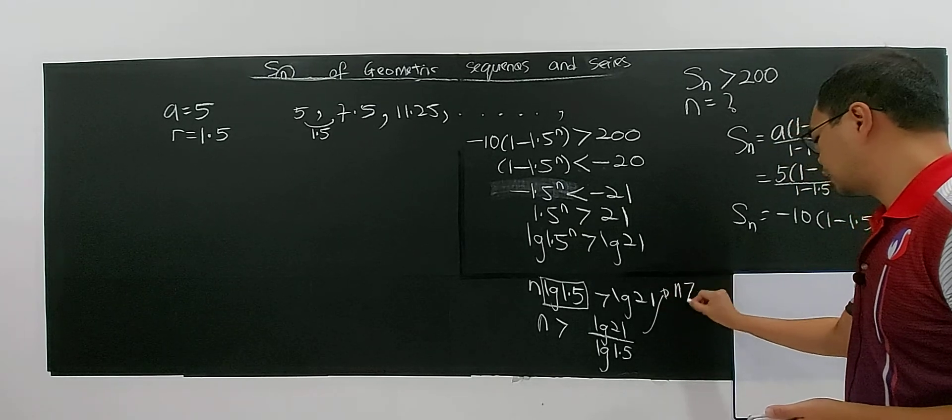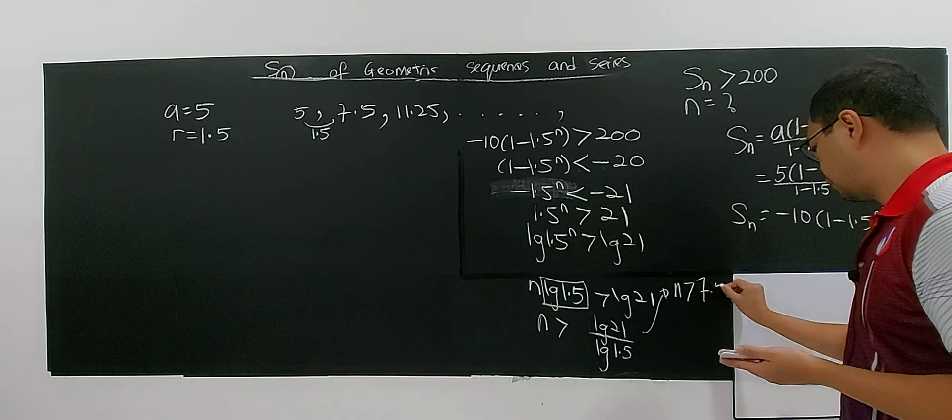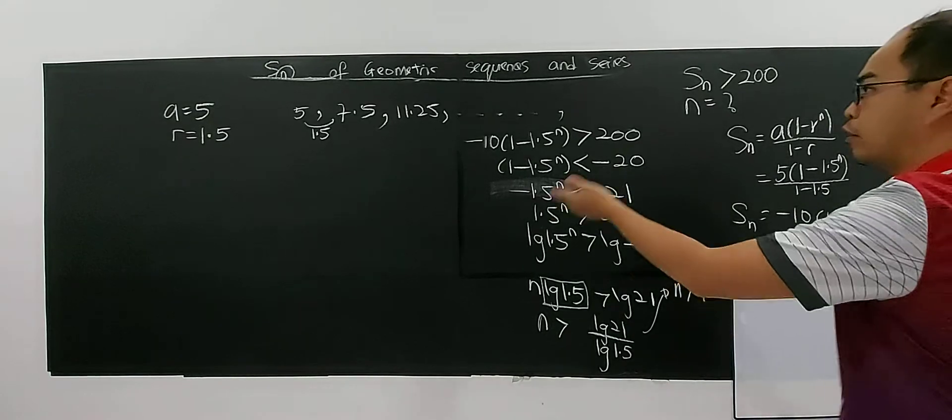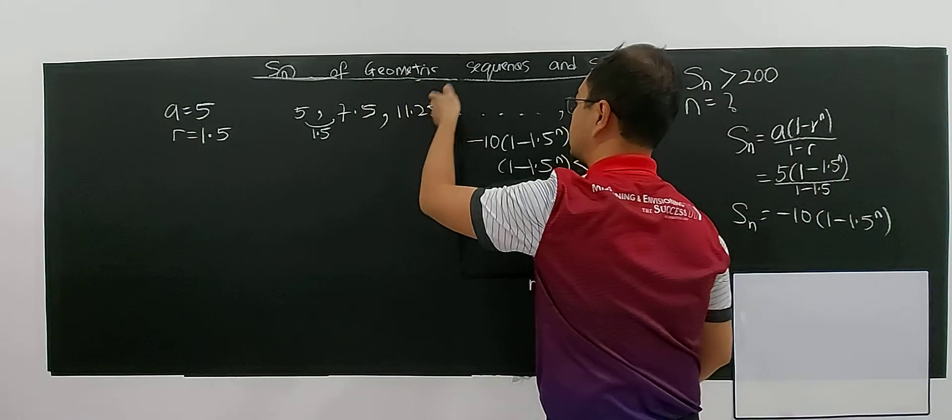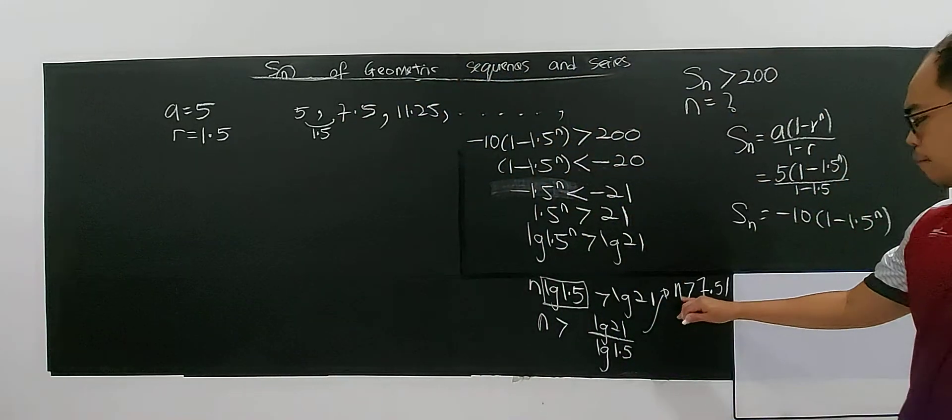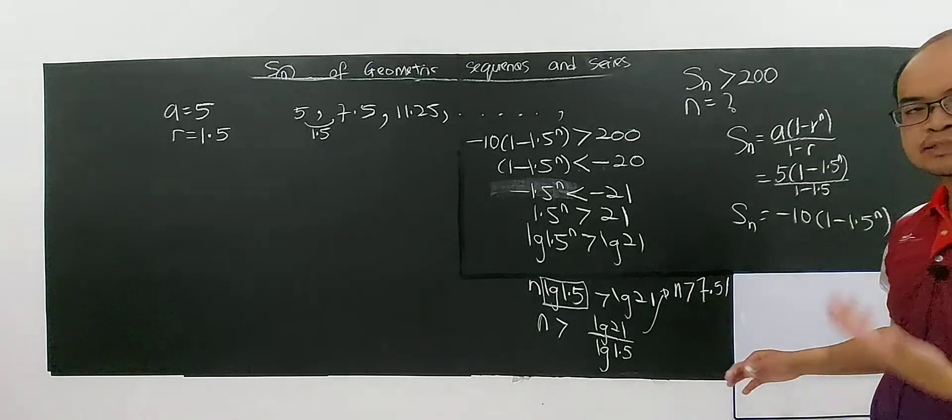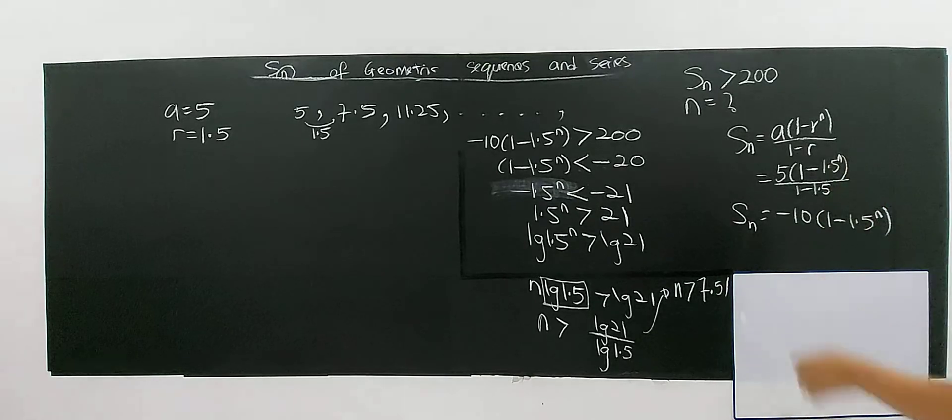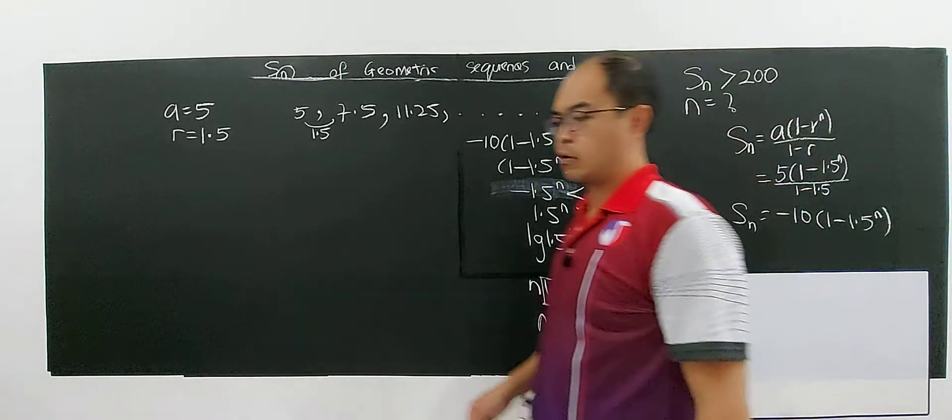So you have n greater than 7.51. n is an integer, n represents the number of terms T1, T2, T3, T4. So n more than 7.5, you cannot choose 7 because 7 is not in the range. So the minimum number, look back the question. The question said the number of terms needed.